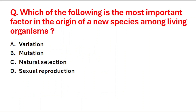Next question: which of the following is the most important factor in the origin of a new species among living organisms? A: variation, B: mutation, C: natural selection, D: sexual reproduction. The right answer is option B, mutation.